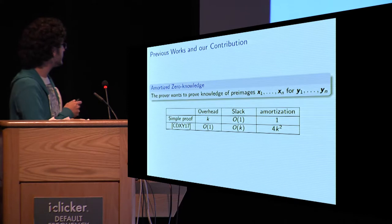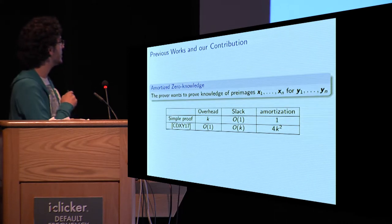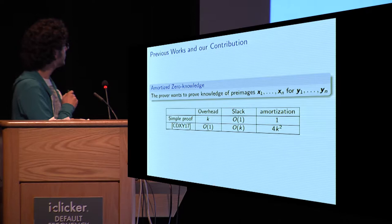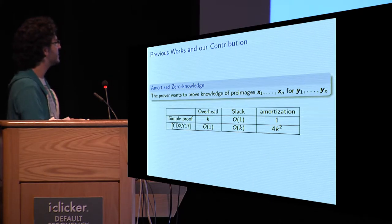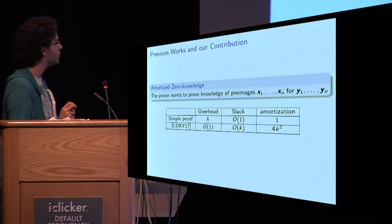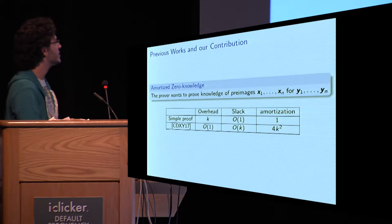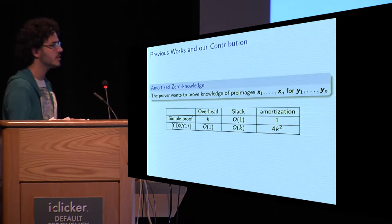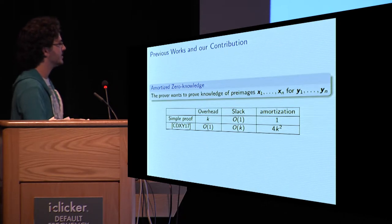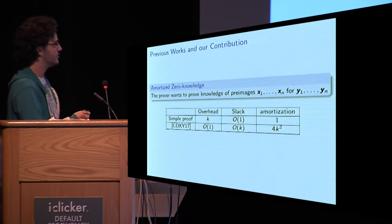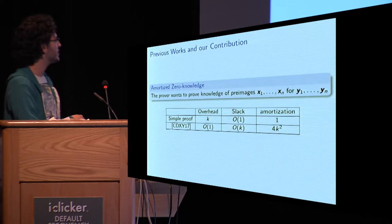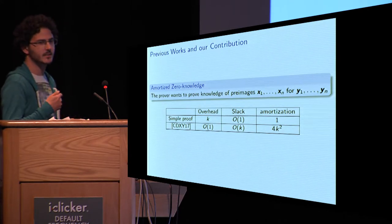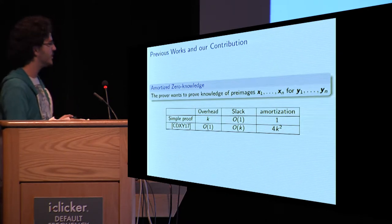A work by Kramer et al at Eurocrypt this year made a huge progress in this direction, in which for amortized zero knowledge, they achieve constant zero knowledge. And the constant is a small one. And they achieve linear slack, which is totally okay, considering the size of the vector we use. On the other end, they need four K squared equations for this amortization to kick in. Which is to say that for K 128 bits of security, we will need nearly 70,000 equations to be able to prove zero knowledge.